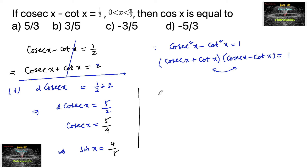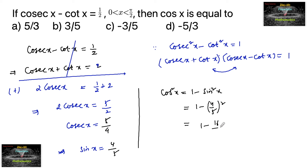When sin x equals 4/5, we have cos squared x = 1 - sin squared x = 1 - (4/5)² = 1 - 16/25 = 9/25. So cos x equals plus or minus 3/5.